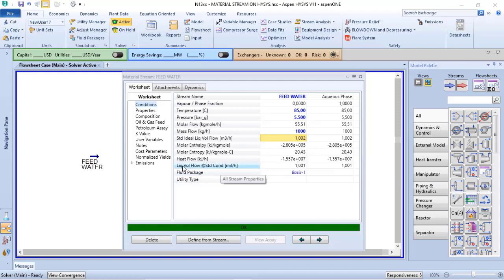Aspen Plus also has liquid volume flow at standard conditions, cubic meters per hour, the same unit of measurement, but the calculation gives 1.001.